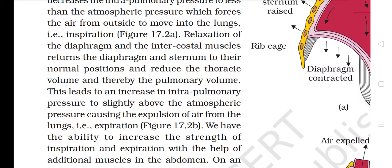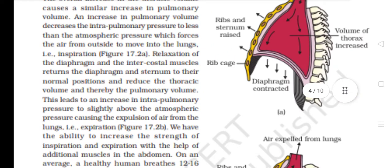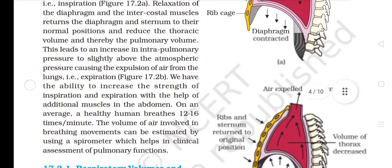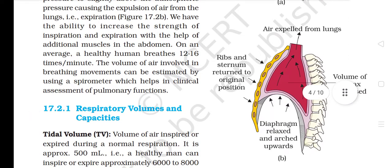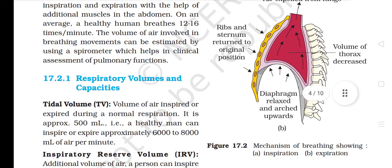Relaxation of the diaphragm and the intercostal muscles returns the diaphragm and sternum to their normal positions and reduces the thoracic volume and thereby the pulmonary volume. This leads to an increase in intrapulmonary pressure to slightly above the atmospheric pressure, causing the expulsion of air from the lungs, i.e. expiration. We have the ability to increase the strength of inspiration and expiration with the help of additional muscles in the abdomen. On an average, a healthy human breathes 12-16 times per minute. The volume of air involved in breathing movements can be estimated by using a spirometer, which helps in clinical assessment of pulmonary functions.